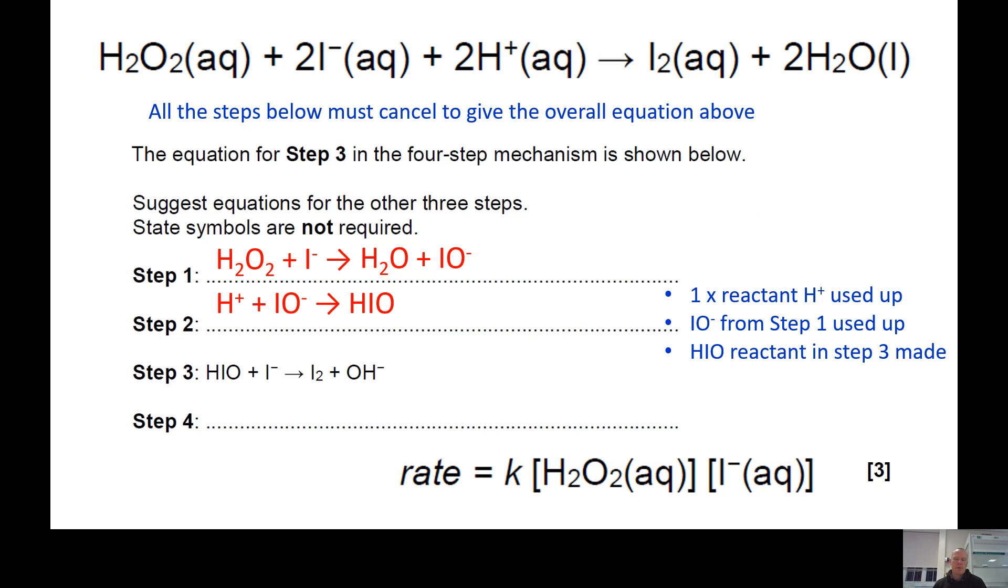In the second step we're now using up one of the H pluses that's in the overall equation. In the first step we've also made one of the waters that are in the product part of the overall equation. I'm always trying to think about ways in which I can create the things that are in the overall equation as I go along. I need to use up my IO- because it's not in the overall equation at the top and also I need to make the HIO reactant in step three. It has to come from somewhere, so I've decided to make it here.